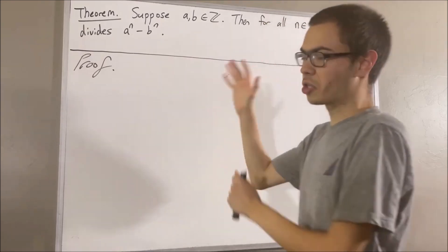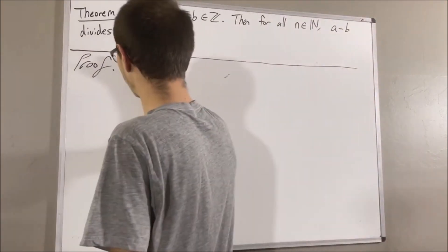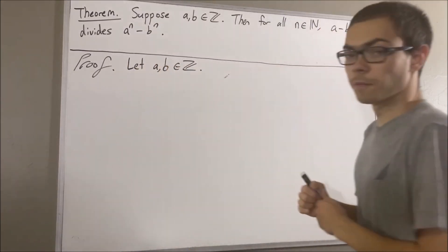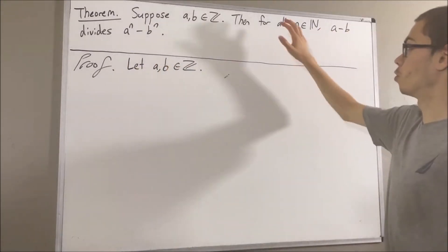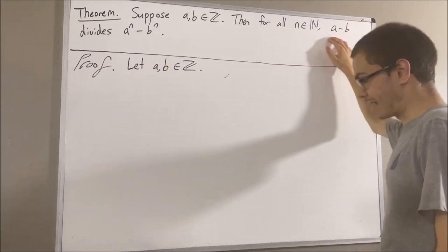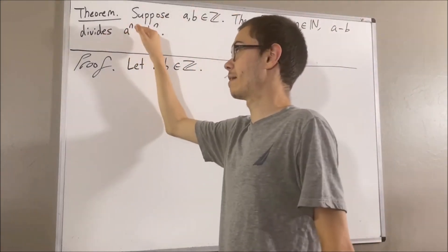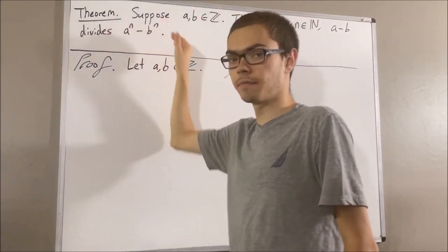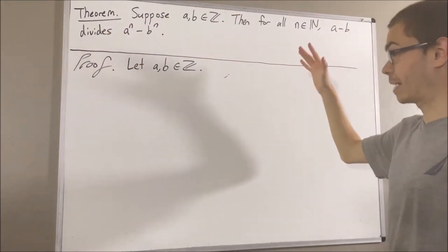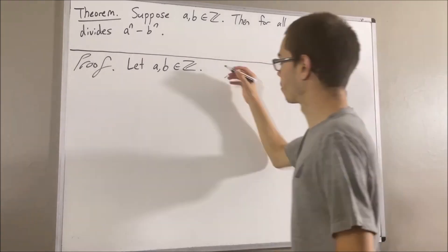Now to start the proof, let's give ourselves two integers A and B. From here, we want to show for all natural numbers n, A minus B divides A to the n minus B to the n. Since we're trying to prove a statement about all natural numbers, let's use induction.